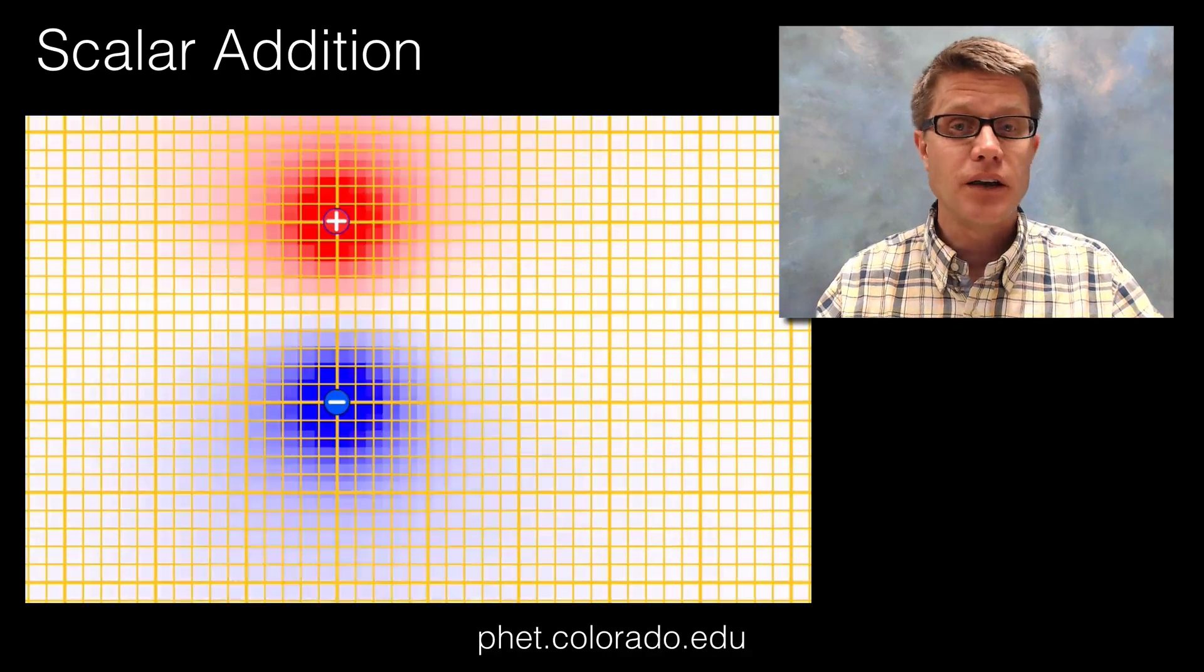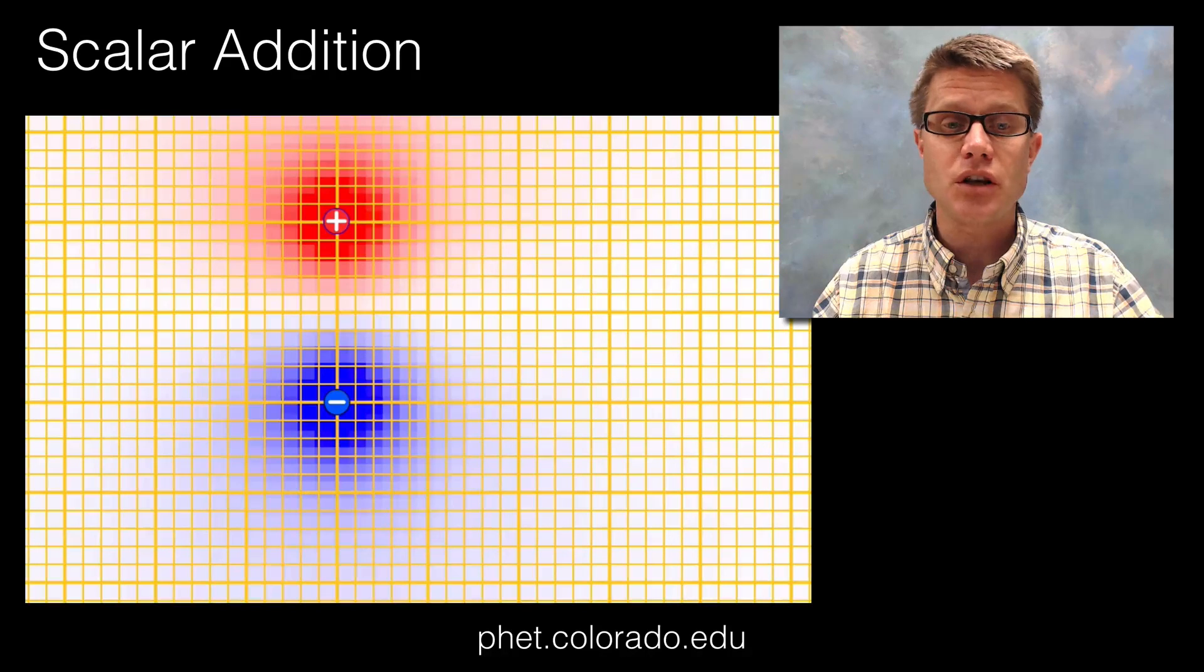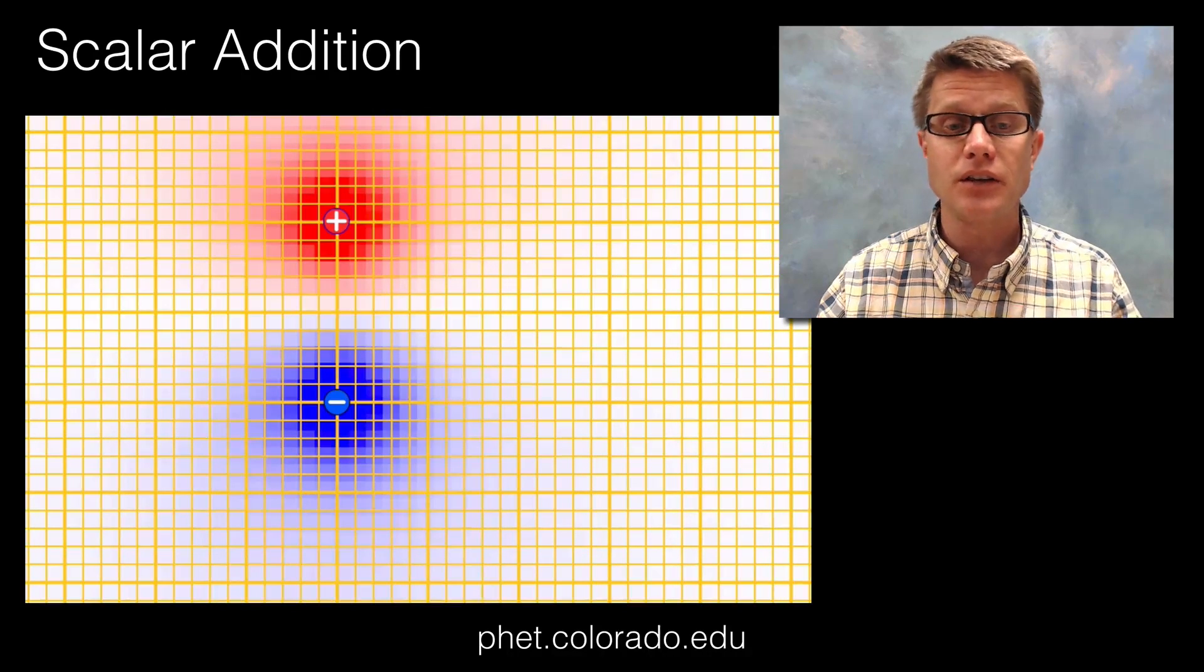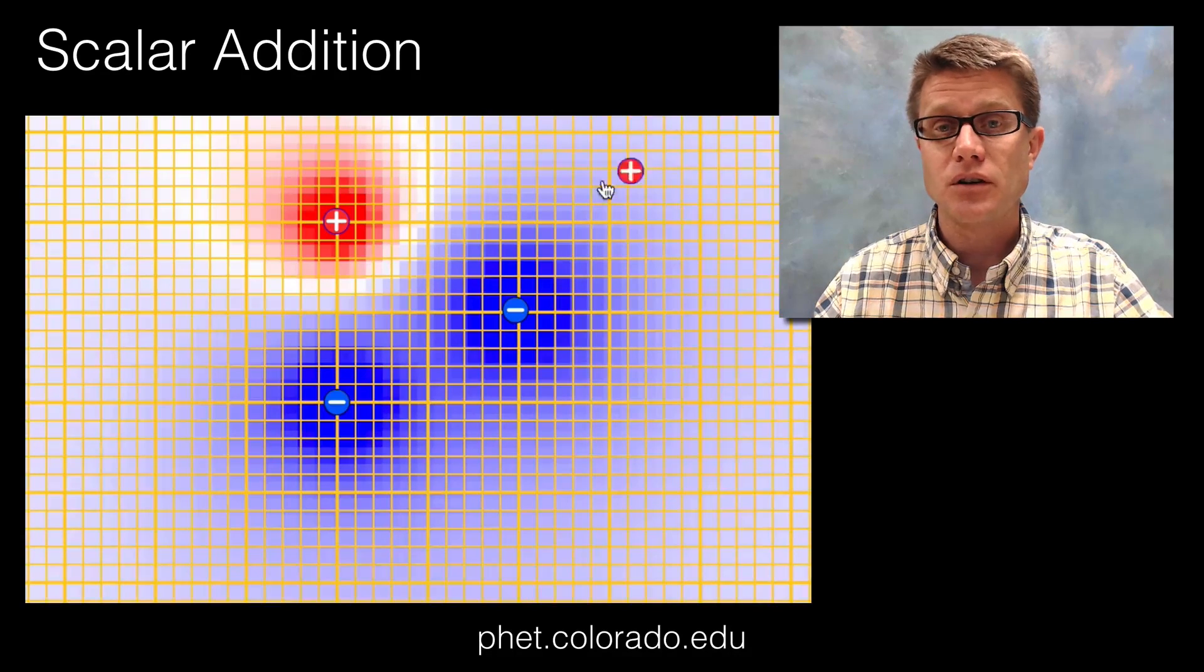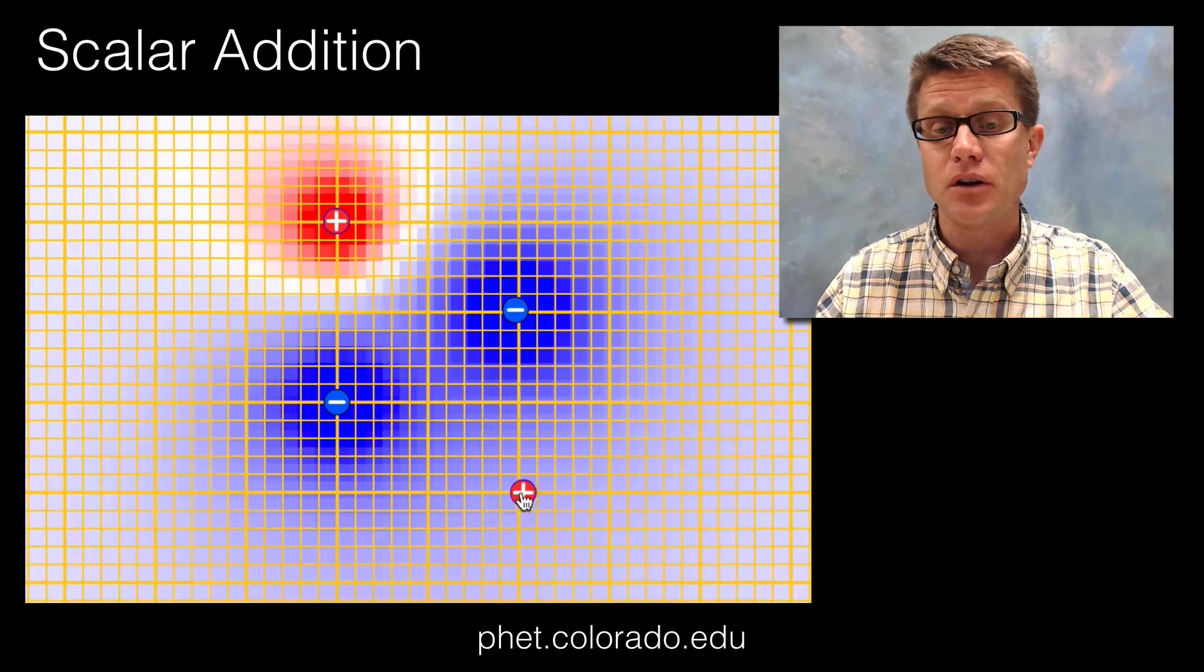You can also add color. And that color, just like that thermal image color, shows us where we're going to have positive values and where we're going to have negative values. You can then add different charges and we can start to see how those scalar fields are affecting each other.